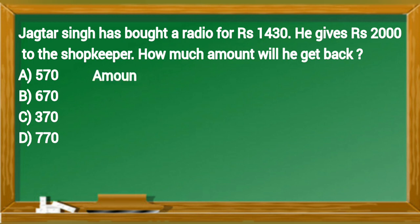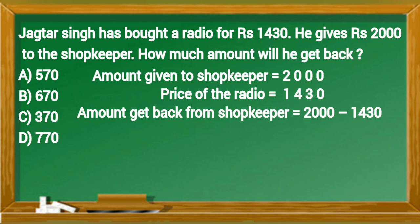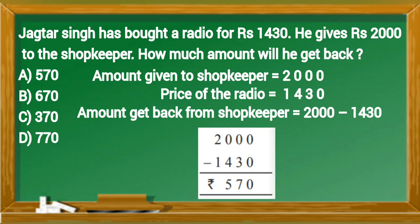Amount given to shopkeeper equals 2,000. Price of the radio equals 1,430. Amount get back from shopkeeper equals subtraction of 1,430 from 2,000. So Jagtar got 570 rupees back from shopkeeper. So option A is correct answer.